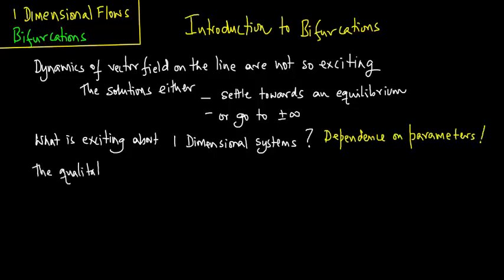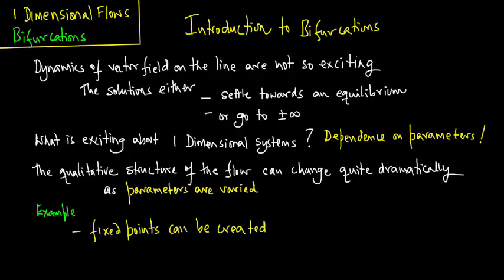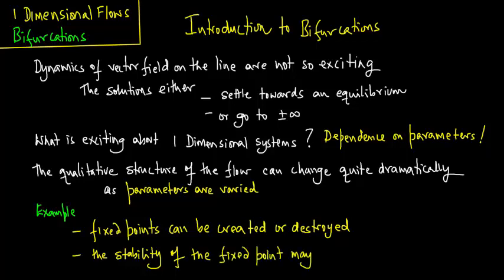The qualitative structure of the flow can change quite dramatically as system parameters are varied. For example, fixed points can be created or destroyed, and the stability of the fixed point may change as system parameters are varied.